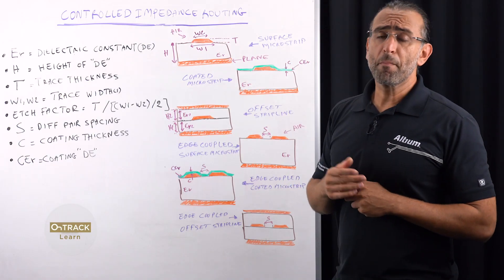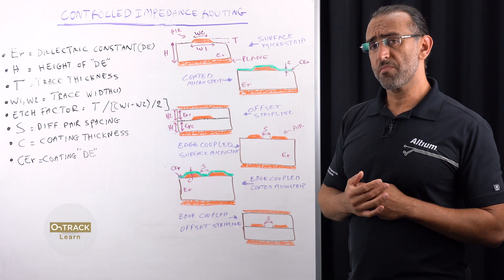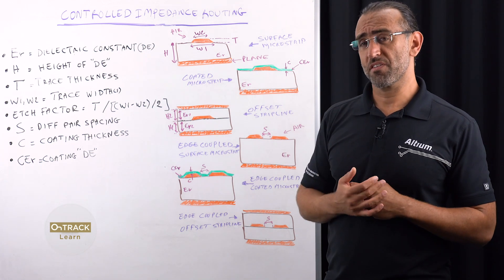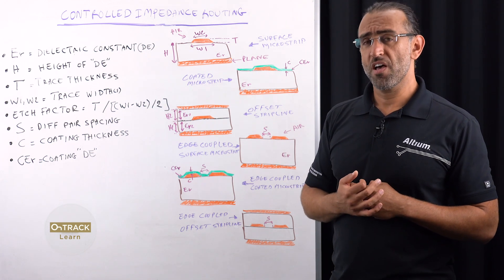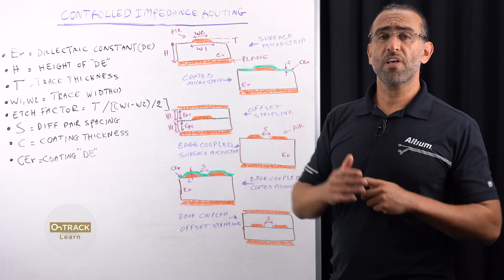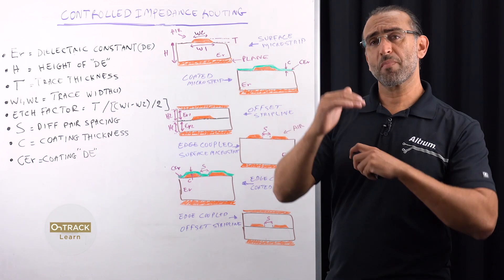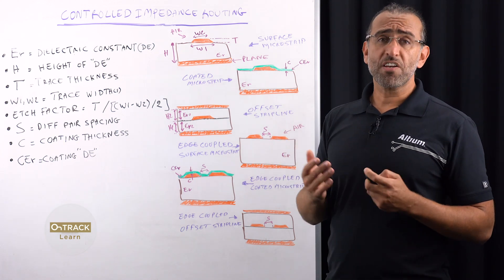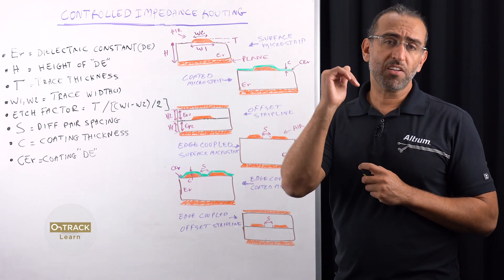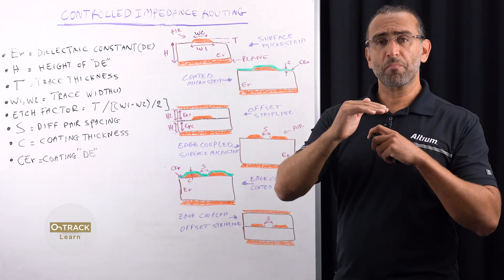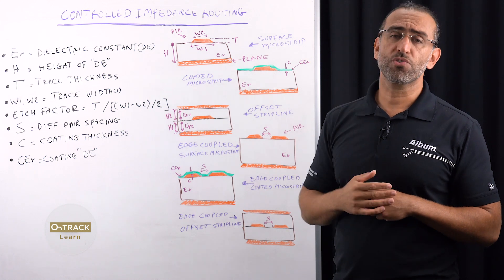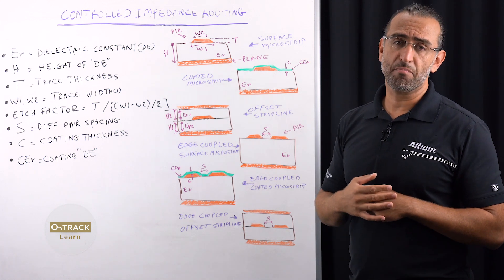On a multi-layer PCB, you have to consider the different possible configurations. Because track controlled impedances are shielded by planes or references, designers have to keep in mind to only consider the dielectric thickness between the plane and either side of the track when calculating the impedance.